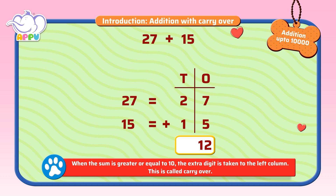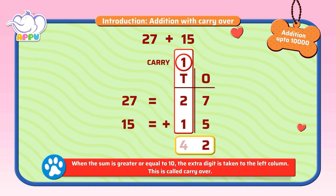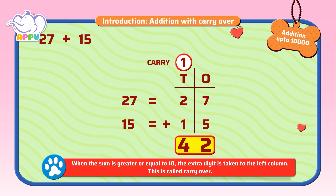We cannot have two digits in one place, so we move the 1 to the tens place. Now we add the tens place: the carryover 1, plus 2, plus 1 equals 4. The answer is 42. So 27 plus 15 is equal to 42.